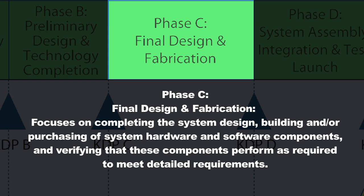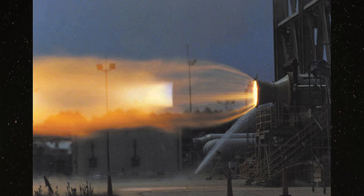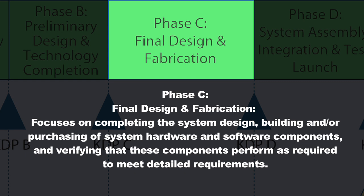You're building or buying all these components separately, and you want to make sure you've defined how they need to perform. For example, a thruster — you've defined how much thrust needs to come out. You want to take that thruster you just purchased and make sure it performs the way you wanted it to. You've also defined how heavy that thruster can be, so you put it on a scale to make sure the mass requirement is being met. You're verifying that the thruster can meet all the requirements for performance and capability defined earlier in your requirements development process.